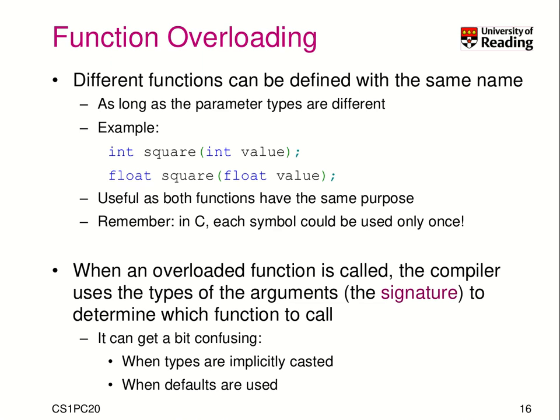This is really useful for functions that have the same purpose but work on different data types. When an overloaded function is called, the compiler uses the type of the arguments — the call signature — to determine which function to call. So if I call square with 5.0, it knows to call square on a float and return a float. If I call square with 30, an integer, it calls the integer version. It can be rather confusing because data types can still be implicitly cast, and there are also default values in C++, which we will discuss next.